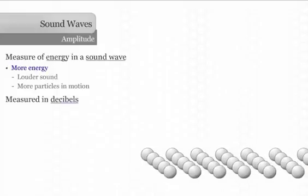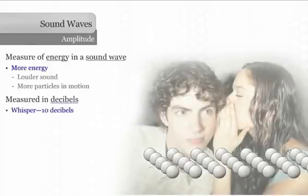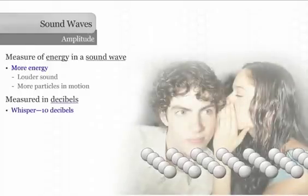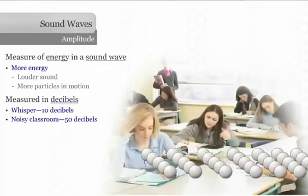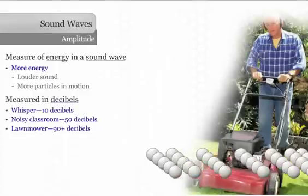Amplitude is measured in decibels. A very soft whisper is about 10 decibels. A noisy classroom is about 50 decibels. Lawn mowers are about 90 decibels.